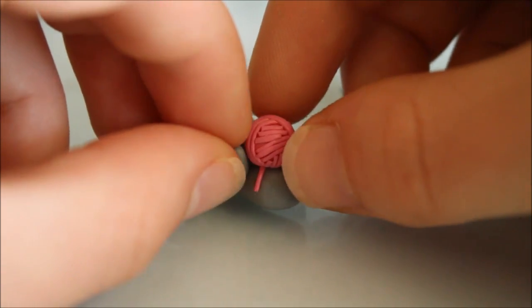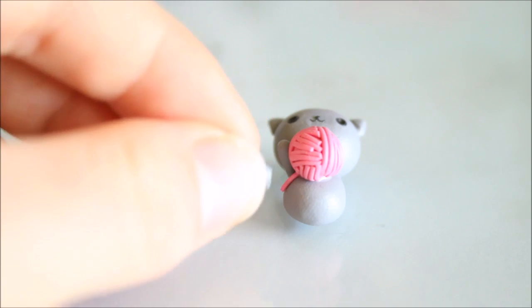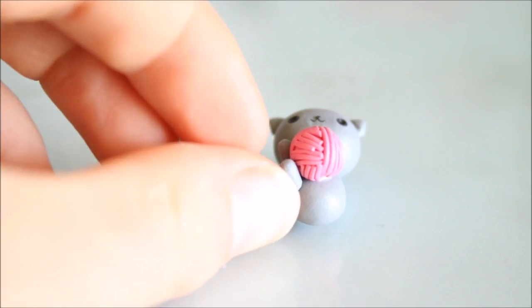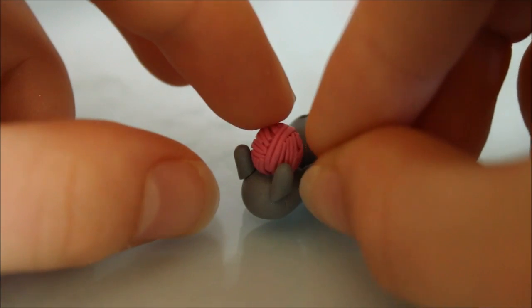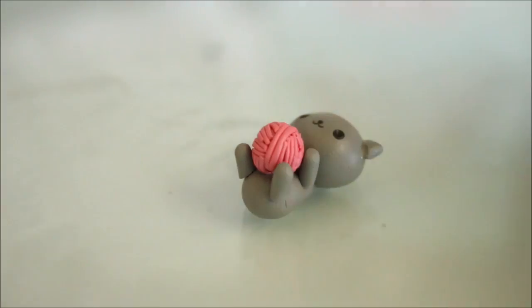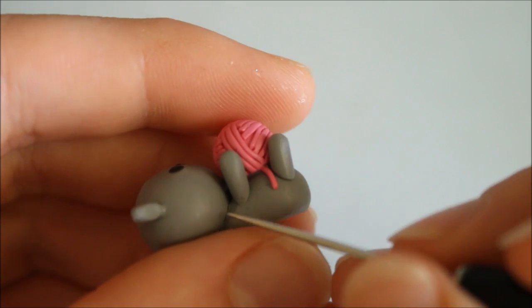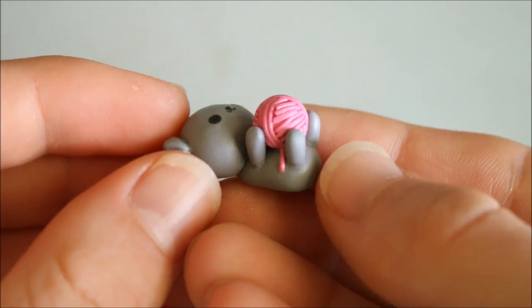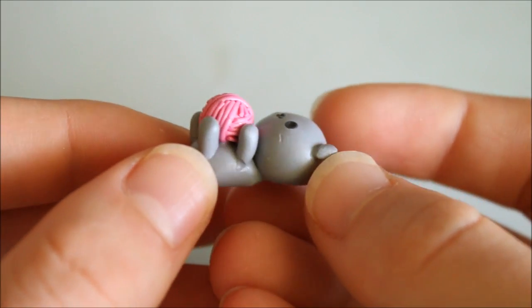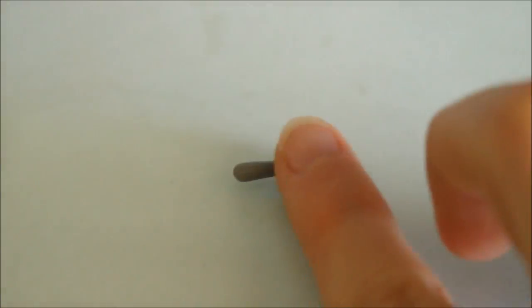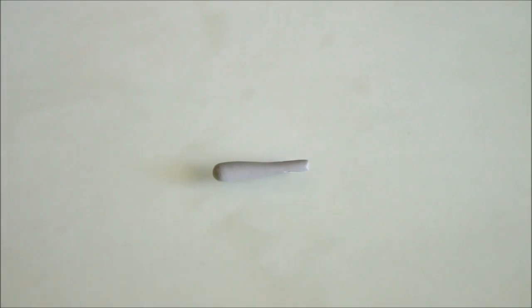Now go ahead and place all four around the body and secure them by blending them on. For the tail roll out another snake and add it onto the body.